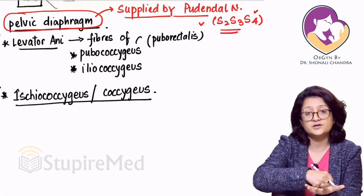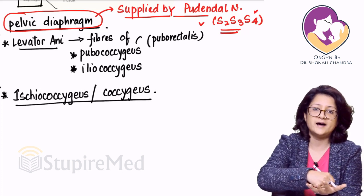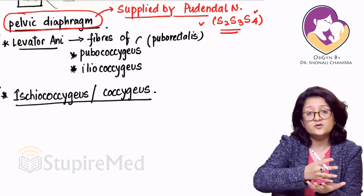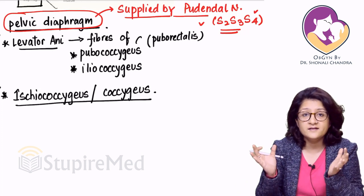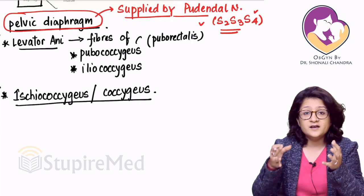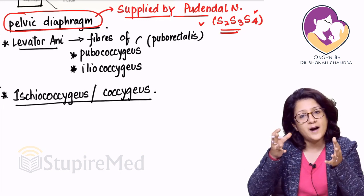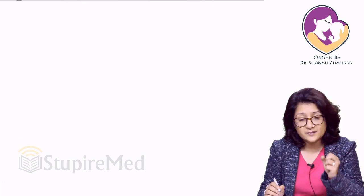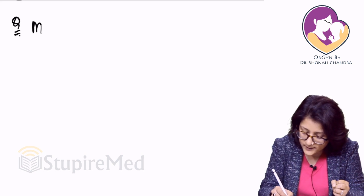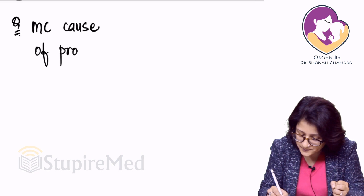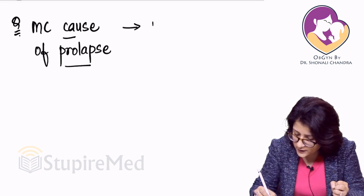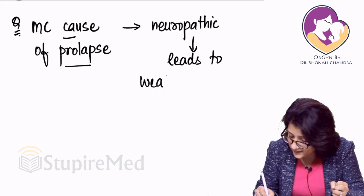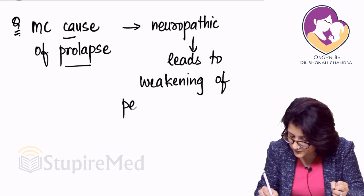This is why exams ask: what is the most common reason for prolapse? The most common cause of prolapse is neuropathic — neuropathy which causes muscle weakness of the pelvic diaphragm. That is the main reason for pelvic organ prolapse. This neuropathy is bound to happen during childbirth. The most common cause of prolapse is neuropathic, leading to weakening of the pelvic diaphragm.